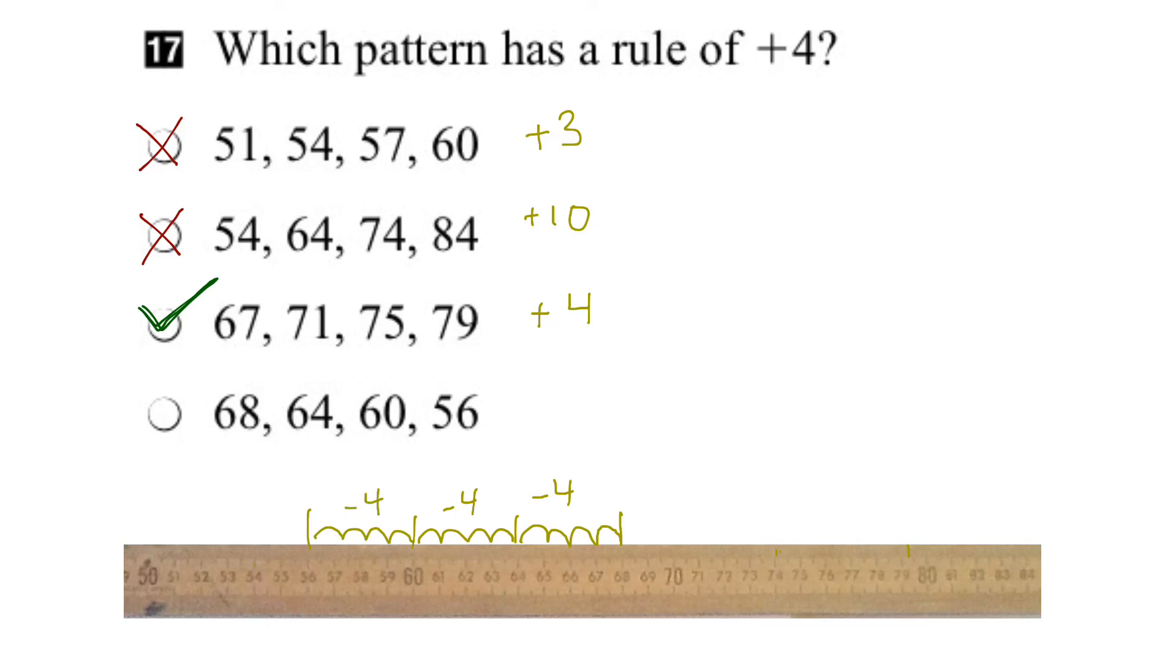So there is a pattern. We're going down by 4, so minus 4, but we're looking for plus 4. So that's why this one here is not the right answer. And there you go.